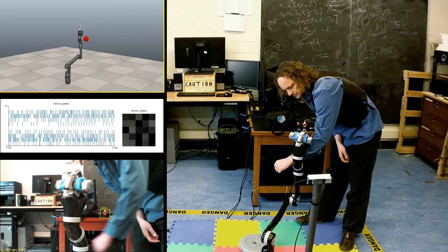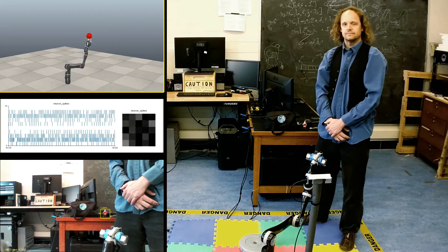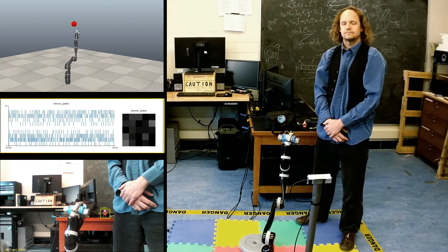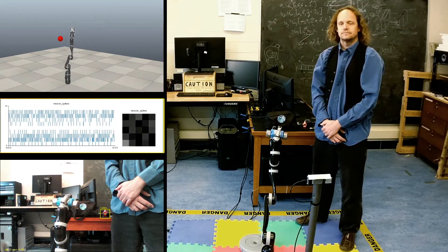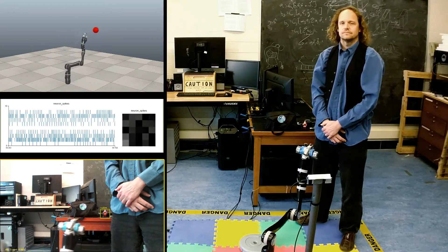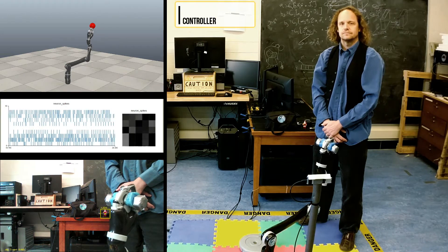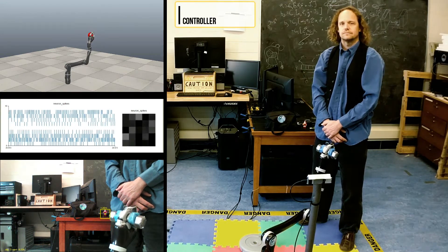The top inset shows a VREP model being driven by the same position information as the robot to help visualize target locations and arm performance. The middle inset is showing neural activity in the adaptive controller. The bottom inset will show a video feed from the vision system. And finally, the last inset indicates which controller is being used at various points in the demo.